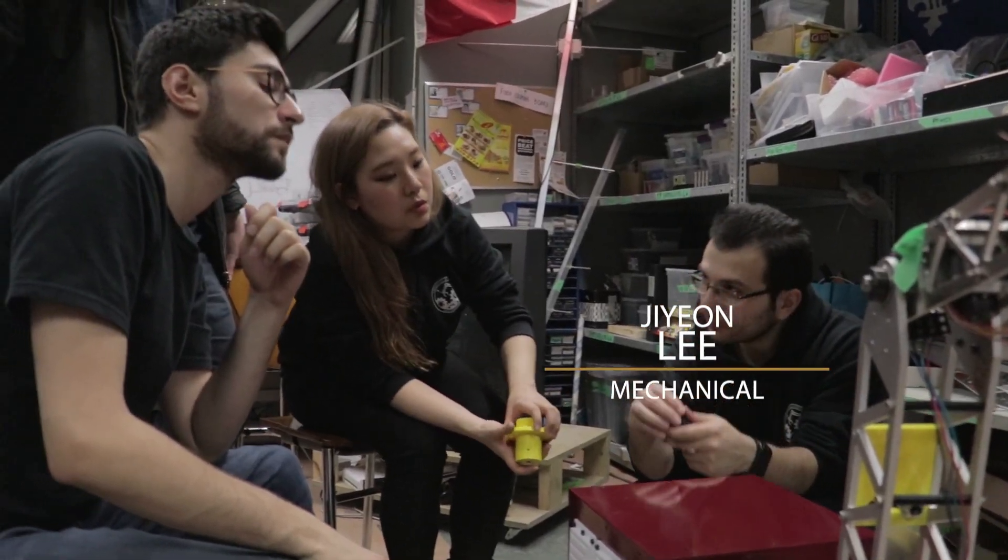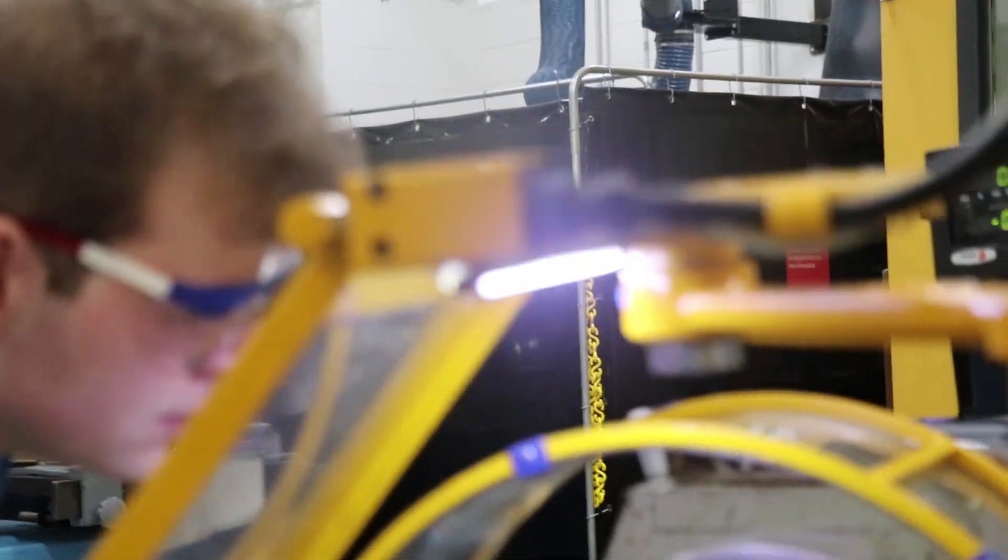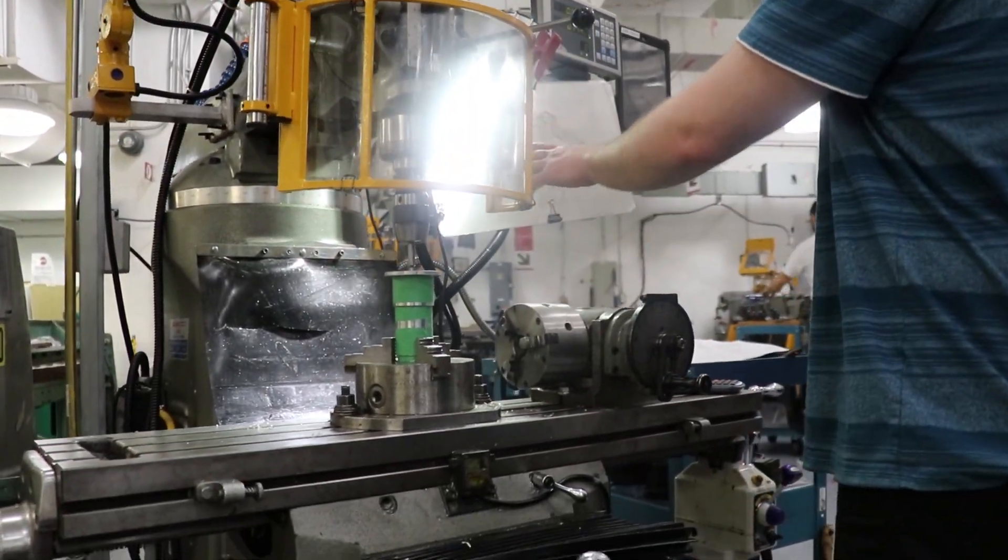The team used a wide variety of processes to manufacture the rover. Conventional mills and lathes were used for most custom parts.